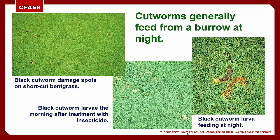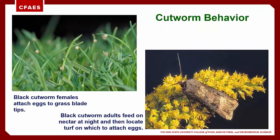Small cutworms merely hide in the thatch during the day, but larger cutworms often form burrows that extend into the soil and feed at night by extending their bodies from these burrows. Larger cutworm larvae usually remain in a single burrow for three to six days before moving to a new location. When treated with insecticides, cutworm larvae often come to the surface to die. In turf, cutworm females attach single eggs to the tips of grass plants at night.